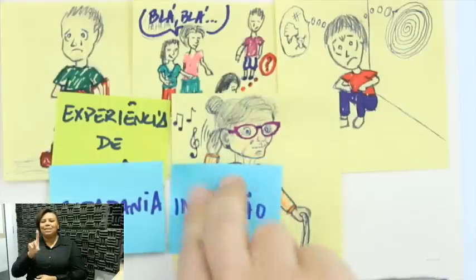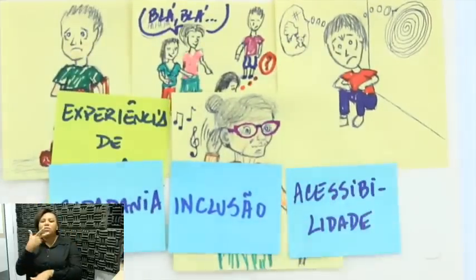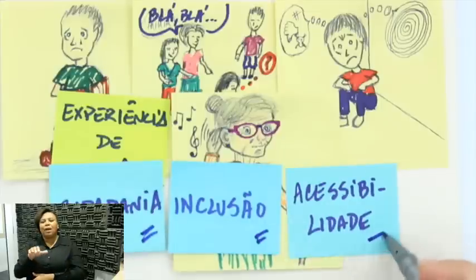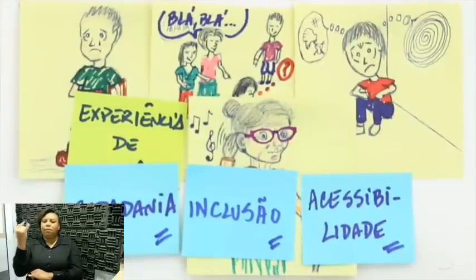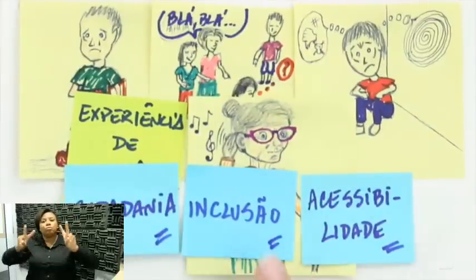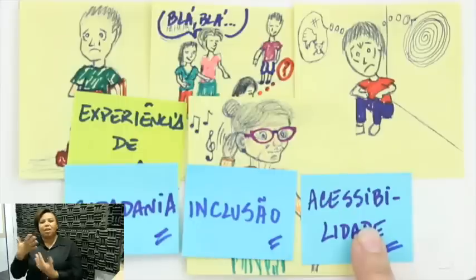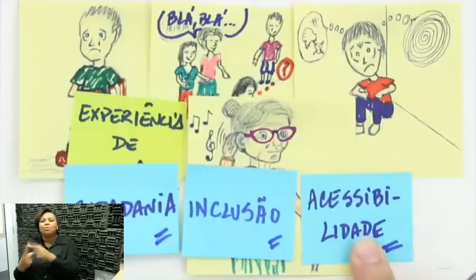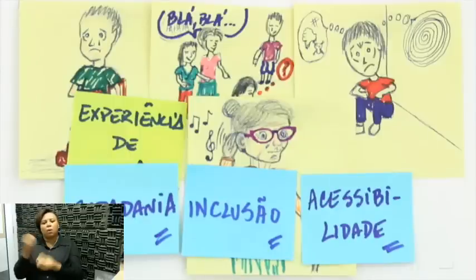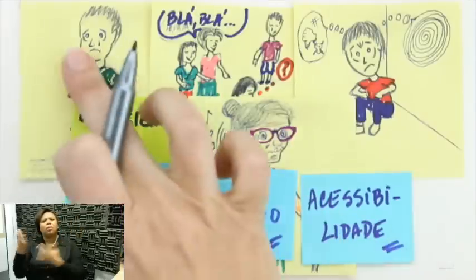Quando a gente fala em deficiência, automaticamente a gente fala em inclusão, e a gente fala em acessibilidade. Essas três palavras são palavras-chave para entender essa questão da deficiência nos dias de hoje. Por isso o título da nossa aula é 'Deficiência Temos Todos: um papo sobre cidadania, inclusão e acessibilidade.' Acabei de colar post-its com essas três palavras porque elas são muito importantes.